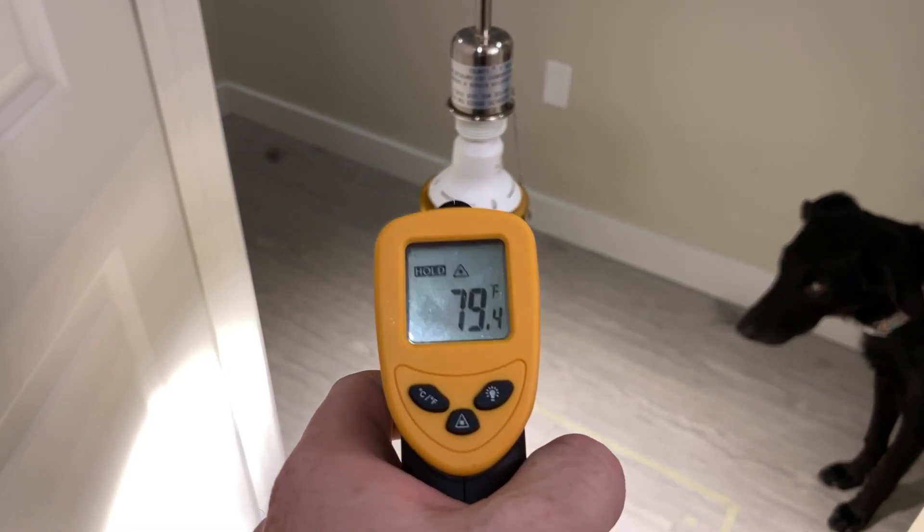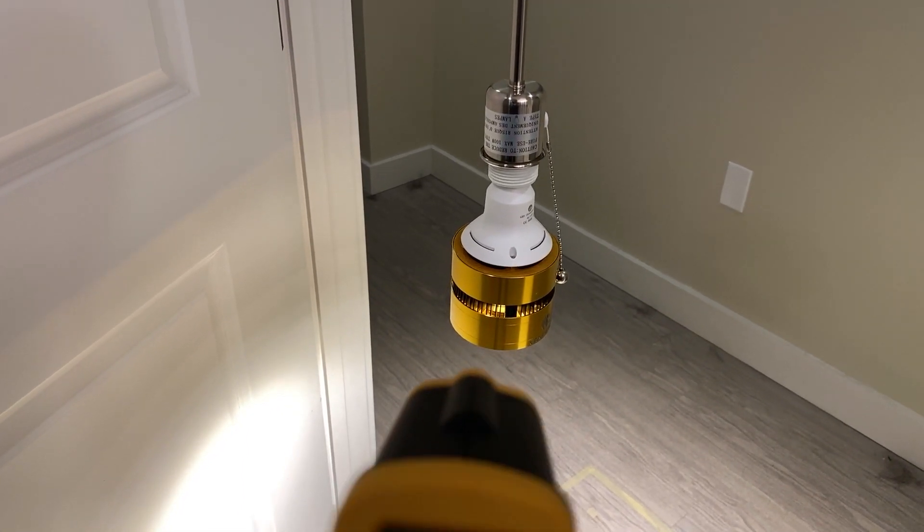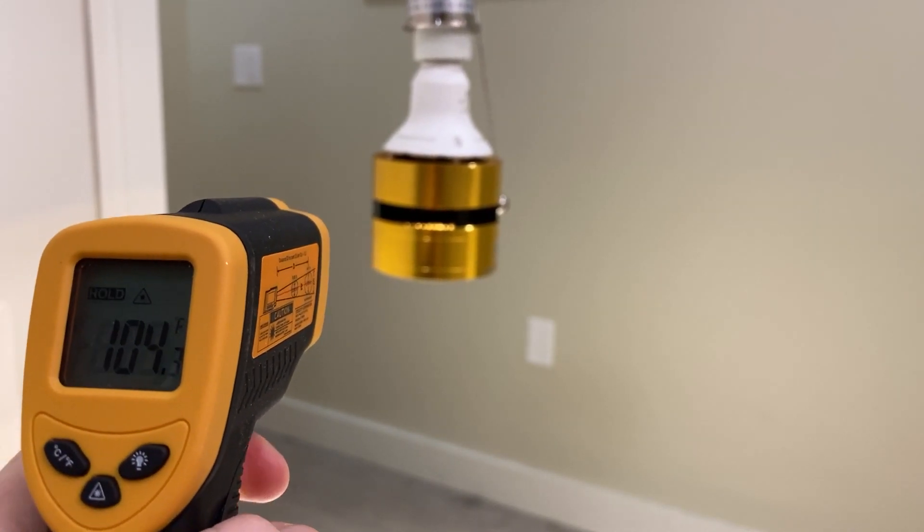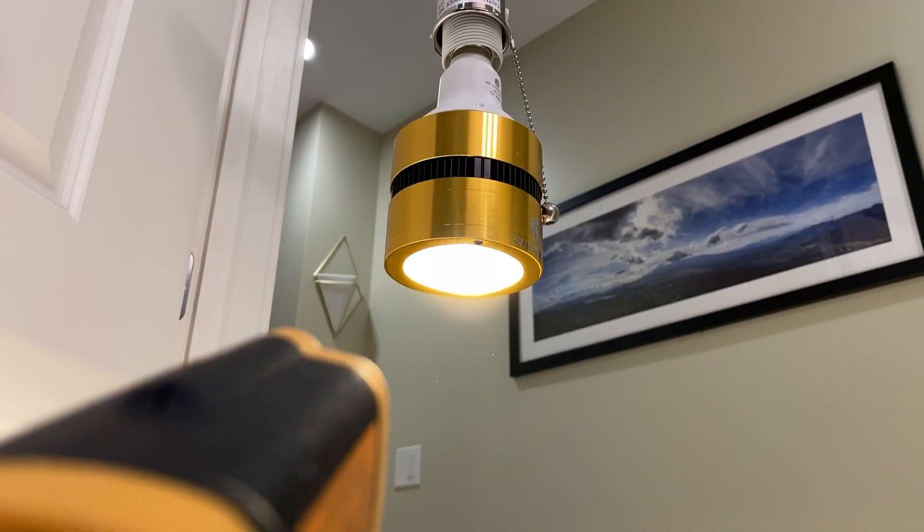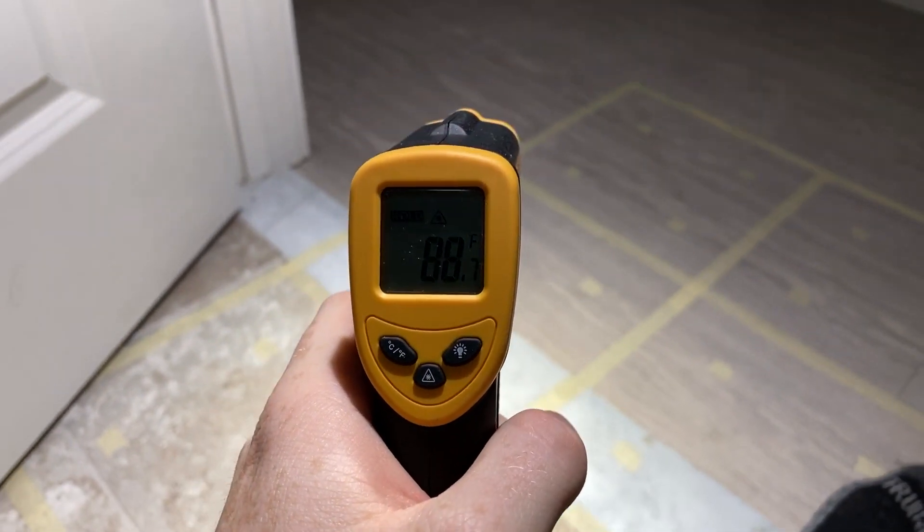In terms of temperature, the back plastic is 79 degrees Fahrenheit. This metal part here is 93 degrees Fahrenheit. Inside of these heatsink fins, 104. And the actual Cobb LED itself is 88 degrees Fahrenheit.